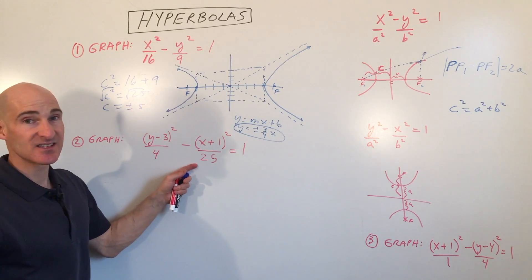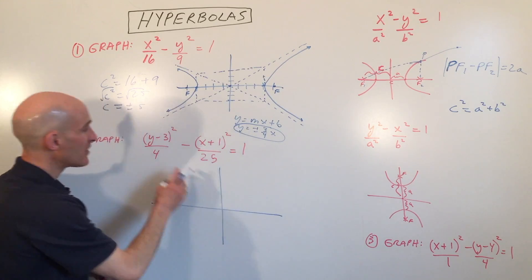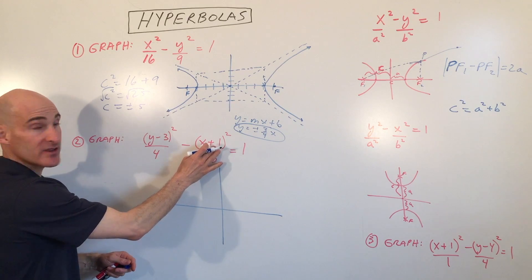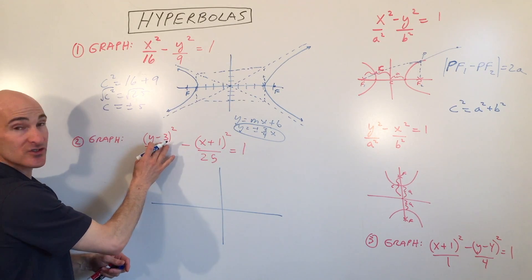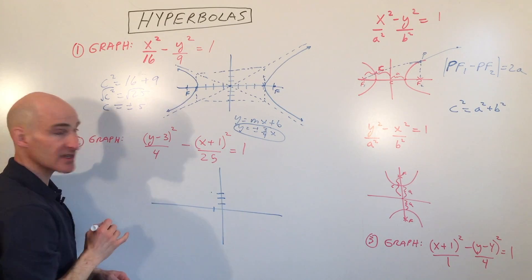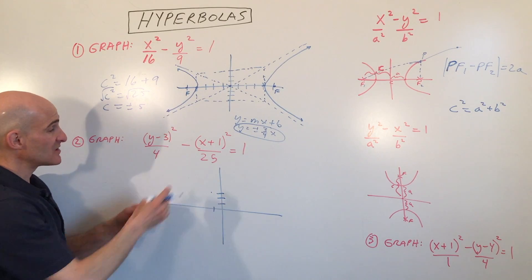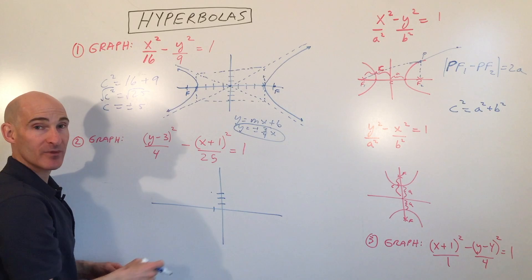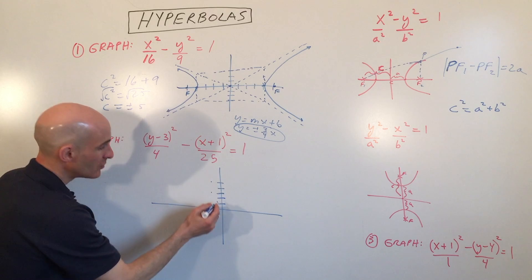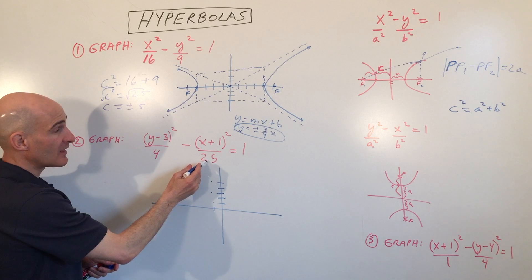Let's take a look at the next example. This one has its center at negative 1 comma 3 — the x-coordinate of the center is grouped with x, the y-coordinate grouped with y. The y-squared is the positive term, which is important to recognize, so it's going to open in the y direction — up and down, the vertical direction. I'm going to go up 2 (square root of 4) and down 2 for the vertices, and right 5 and left 5 in the x direction.